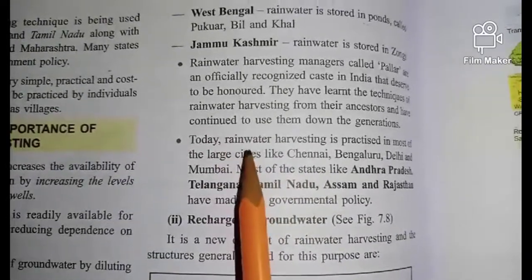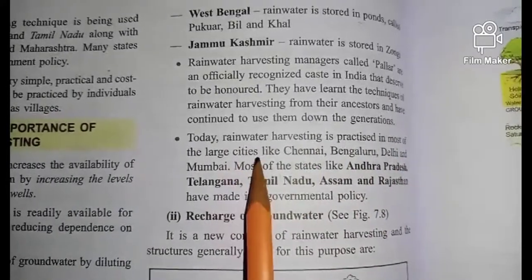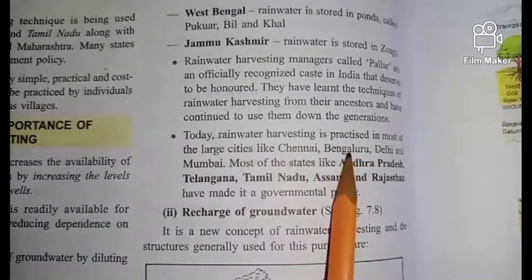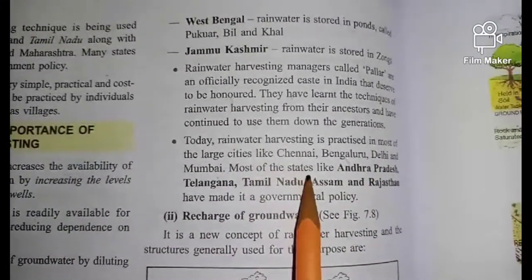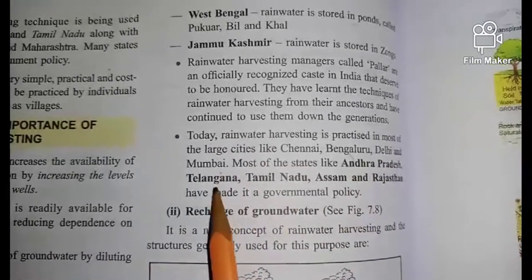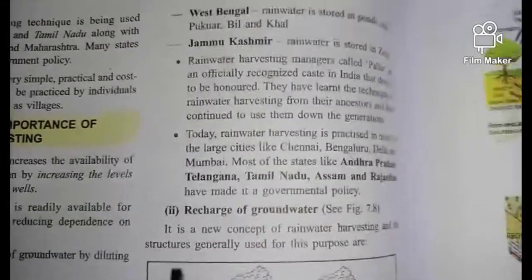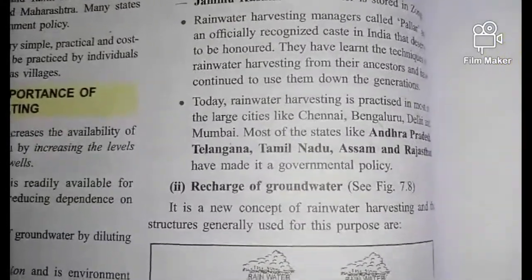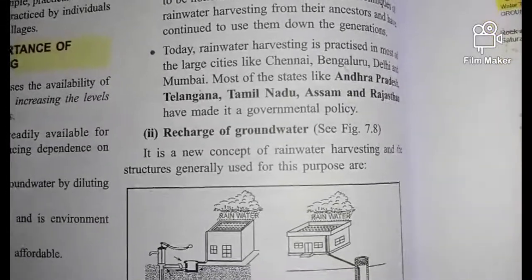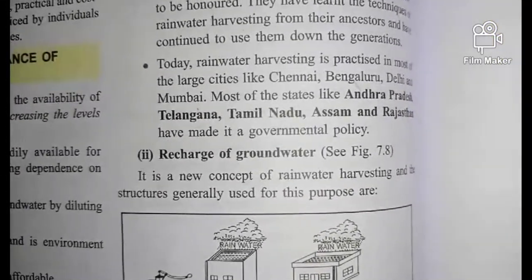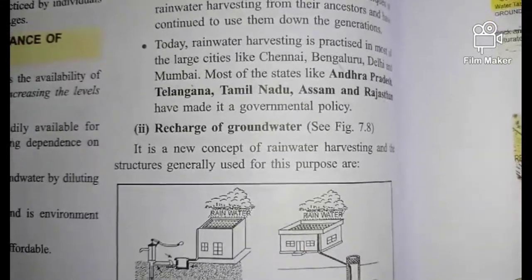From today's point of view, rainwater harvesting is practiced in most of the largest cities in India, such as Chennai, Bengaluru, Delhi, and Mumbai, and also in most states like Andhra Pradesh, Telangana, Tamil Nadu, Assam, and Rajasthan. The government has also made policies regarding rainwater harvesting, and to some extent the government helps people to initiate rainwater harvesting.